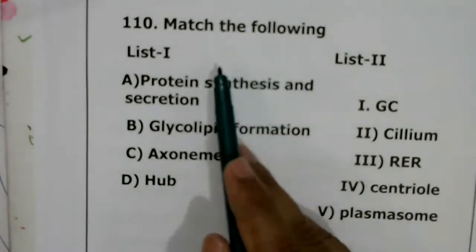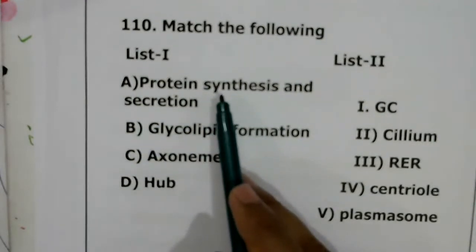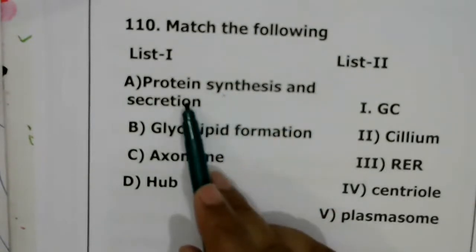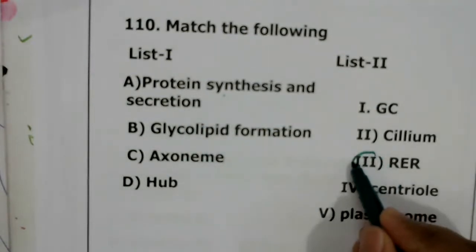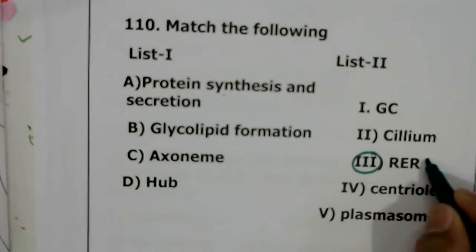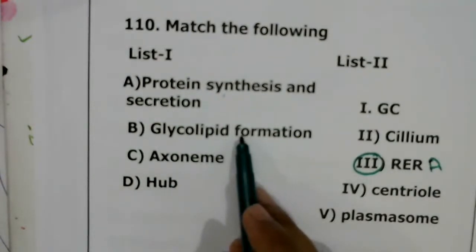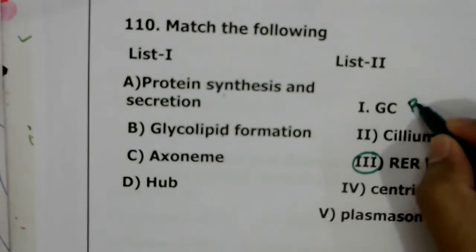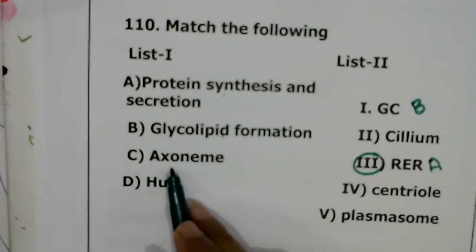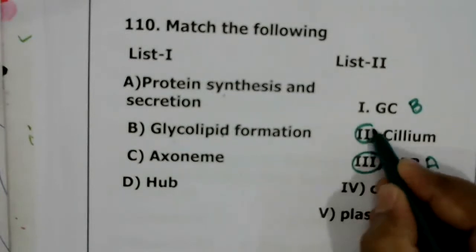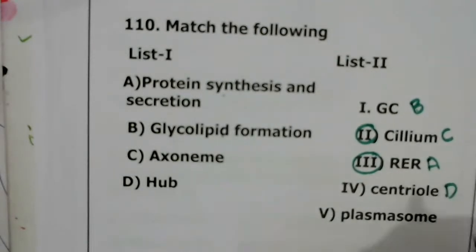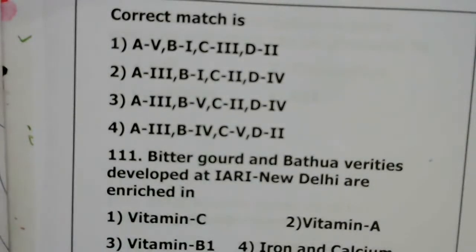Question 110: match the following. Protein synthesis and secretion — rough endoplasmic reticulum. Glycolipid formation — Golgi complex. Axonemes are present in cilia and flagella. Hub is present in centrioles. The correct answer for question 110 is the second option.